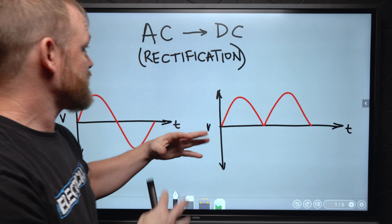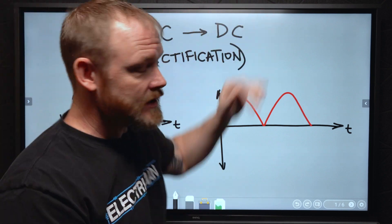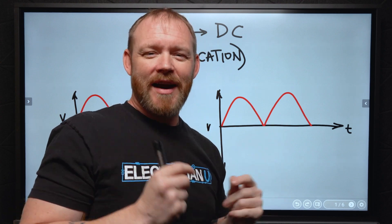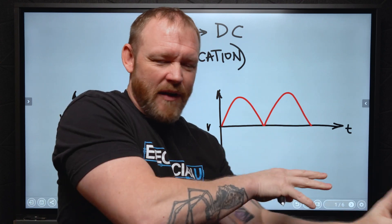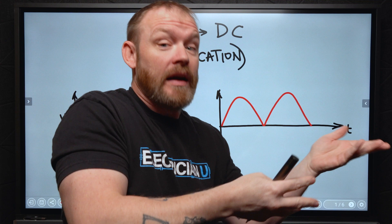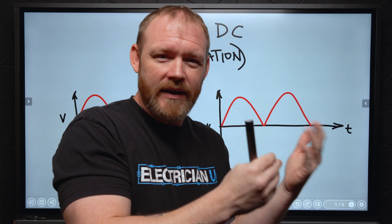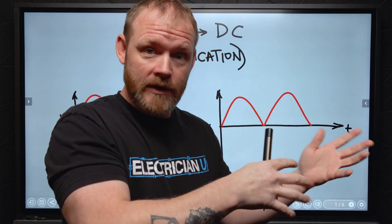So let's talk about the different processes for converting AC to DC or DC to AC. In both processes, we're kind of just duping the devices that are hooked up to thinking that it's DC or thinking that it's AC when in reality, we're creating a synthetic fake signal that looks very similar.